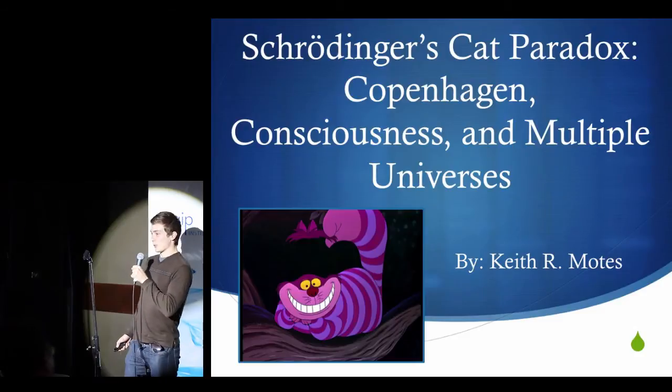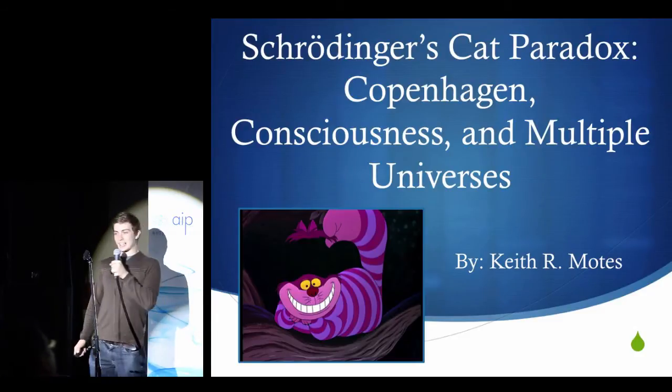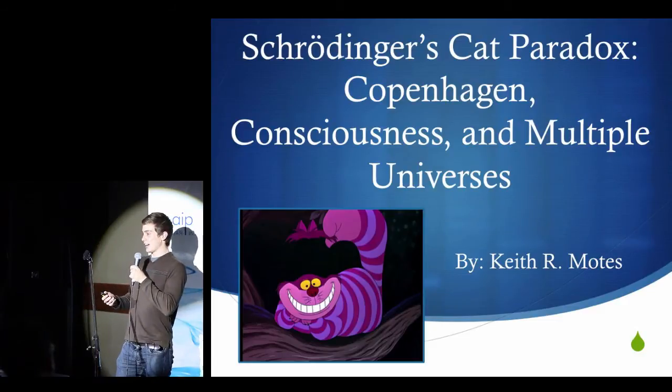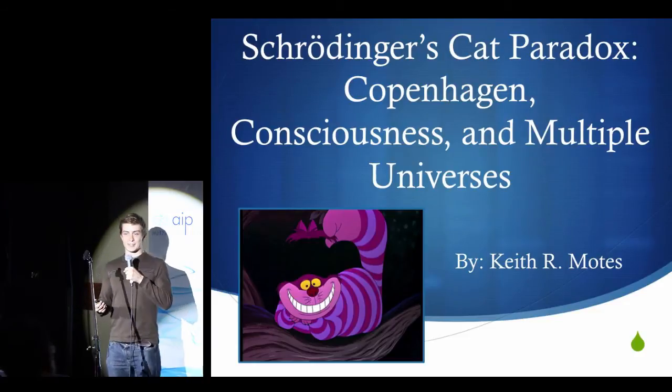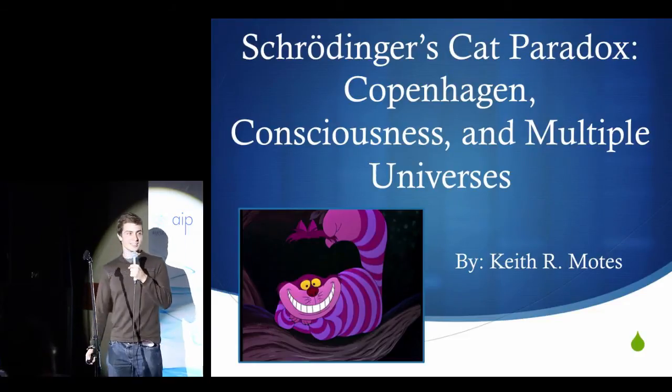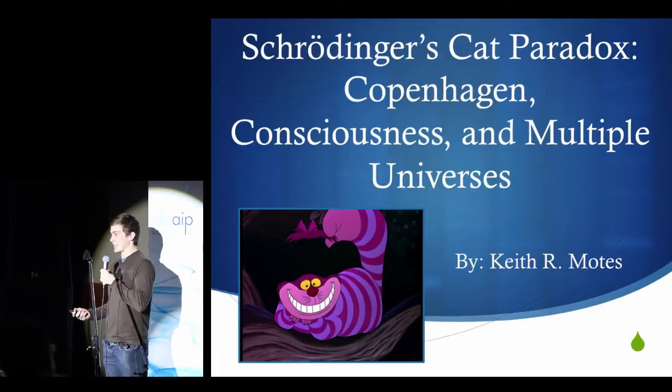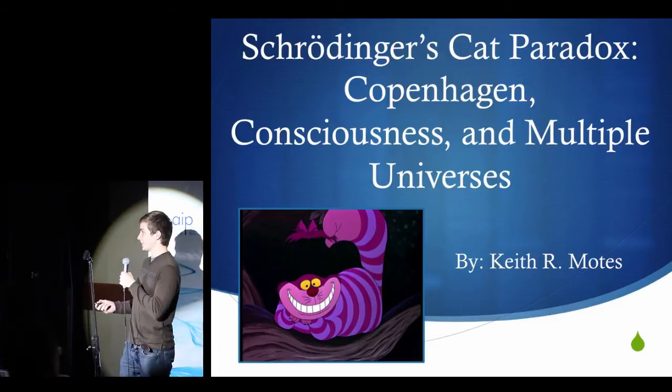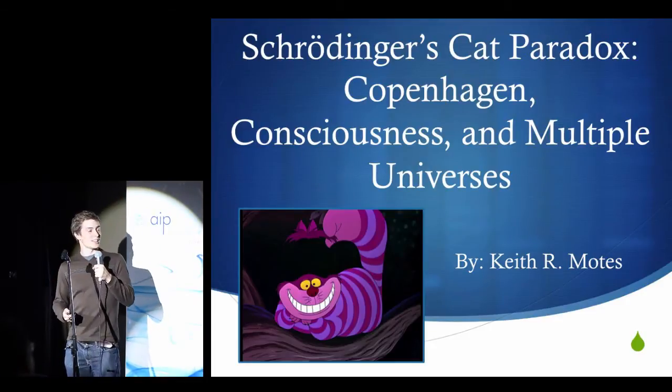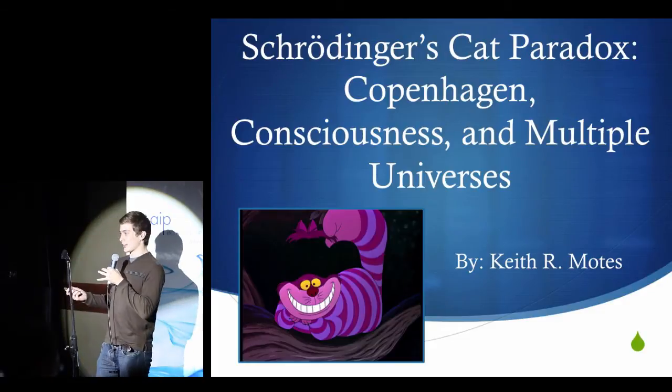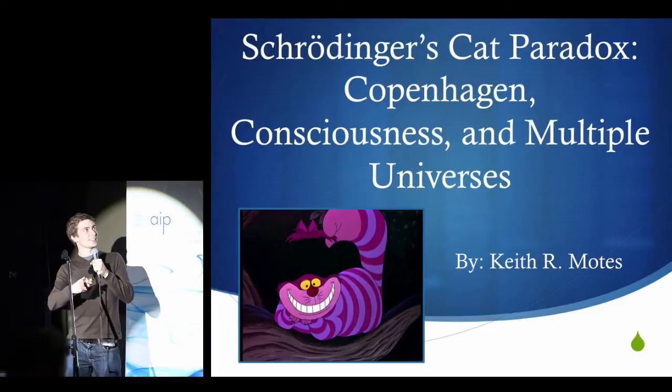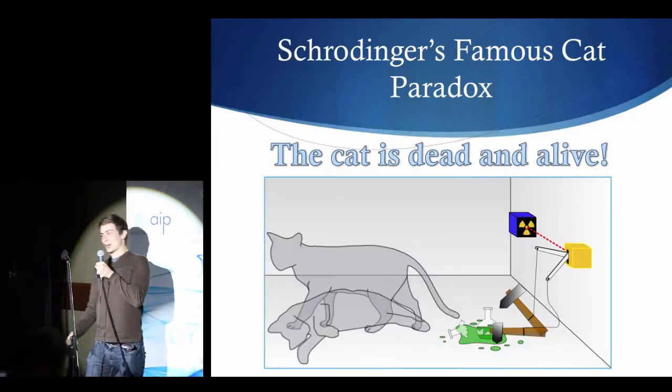So before I explain the famous cat paradox, you need to understand something really awesome about quantum physics, and that's the idea of superposition, which was talked a little bit about earlier. This idea says that quantum states can be basically more than one thing at the same time. They can be multiple things at once. It's bizarre and it helps us explain the Schrödinger's famous cat paradox.